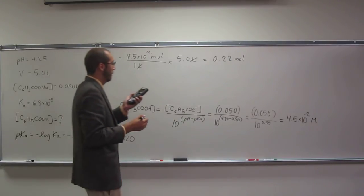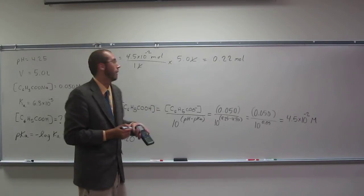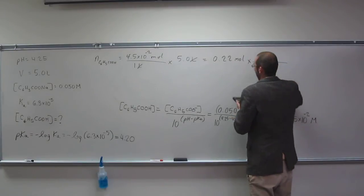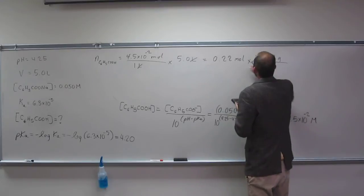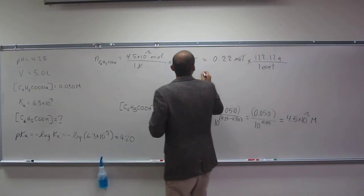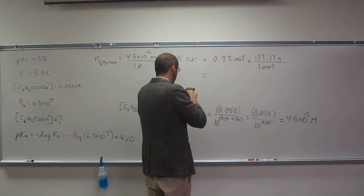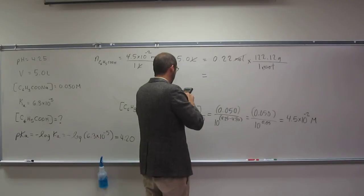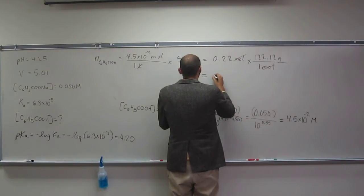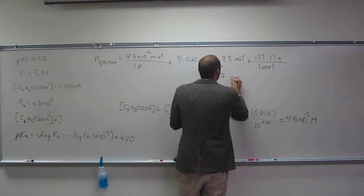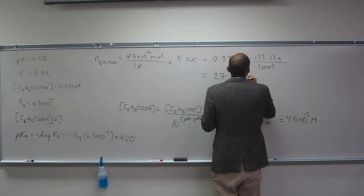I got 122.12. So this is the number of moles of benzoic acid and for every 122.12 grams of benzoic acid, you have one mole. So cancel, cancel, and that's going to give you... And I get 27 grams of benzoic acid.